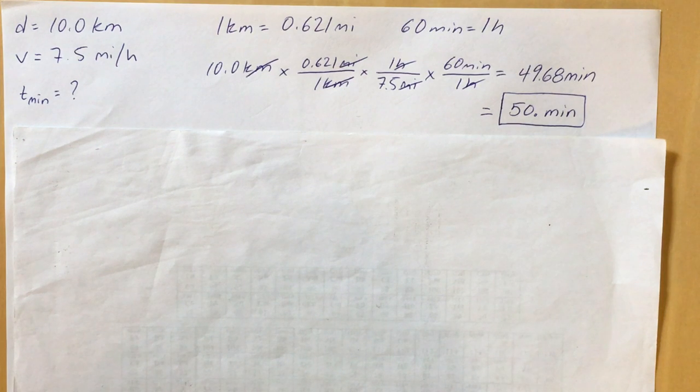That cancels the kilometers out, and then we don't want any sort of distance so we've got to cancel those miles out too. You just look around for something that can be used as a conversion factor and you see that the velocity there is really 7.5 miles per one hour. So you can use that as a conversion factor. Just flip it over and that'll cancel your miles out, putting the 7.5 miles in the denominator there.